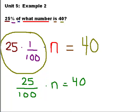25 over 100 can be reduced down. I know that 25 goes into both 25 and 100. 25 goes into 25 once, and 25 goes into 100 four times.